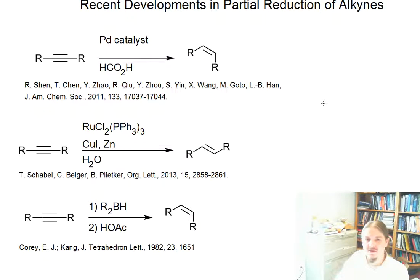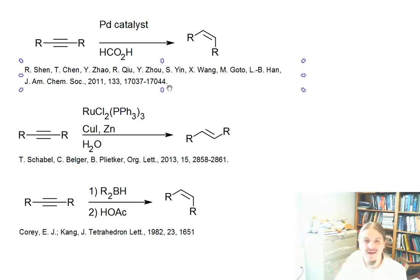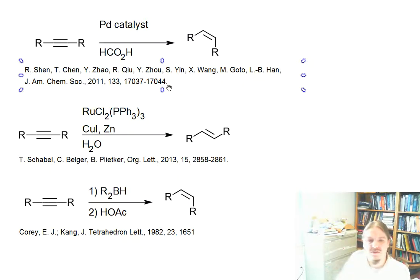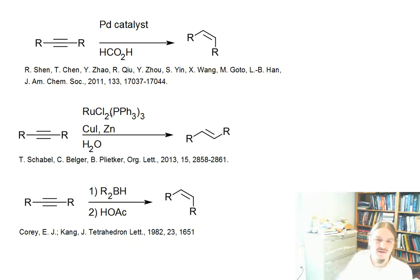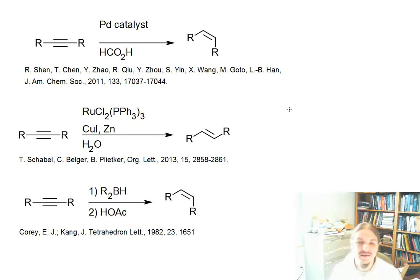Another topic of research in partial reduction is a way to get to trans alkenes using methods other than dissolving metal reductions. Dissolving metal reduction is actually a pretty hardcore reaction and it reduces other functional groups as well. So there's some desire to find metal-catalyzed variants. It turns out that various ruthenium catalysts — specifically tris(triphenylphosphine) ruthenium dichloride — in the presence of copper iodide and zinc will convert water into the hydrogen source and make trans alkenes. This was reported in 2013 in the journal Organic Letters.